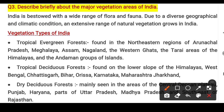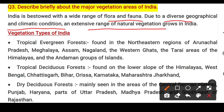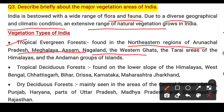Question 3: Describe briefly the major vegetation areas of India. India is blessed with a wide range of flora and fauna due to diverse geographical and climatic conditions. The extensive range of natural vegetation grows in India. Tropical Evergreen Forests are found in the northeastern region — Arunachal Pradesh, Meghalaya, Assam, Nagaland — and in the Western Ghats and islands.